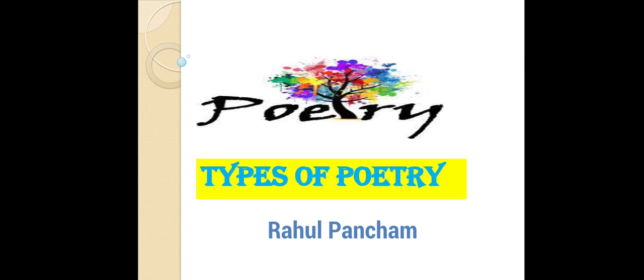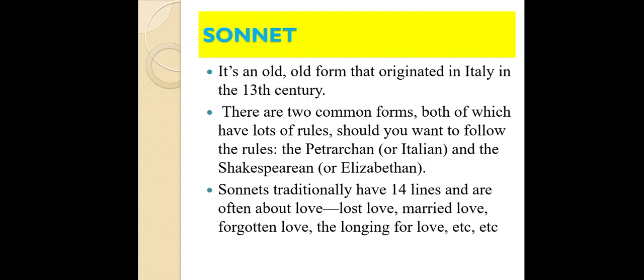Hello friends, now we are going to discuss about poetry and the types of poetry. Sonnet is one of the oldest forms of poetry. It originated in Italy in the 13th century. There are two common forms, both of these have lots of rules. If you want to follow the rules of a sonnet, you will be writing in the Petrarchan sonnet, which is also called the Italian sonnet, and the Shakespearean sonnet or Elizabethan sonnet.